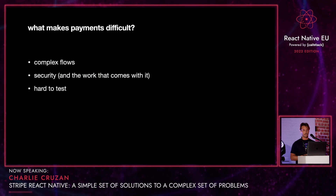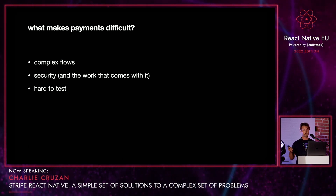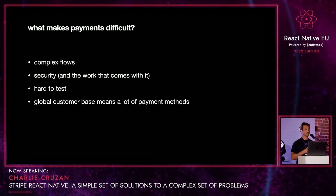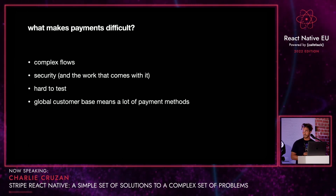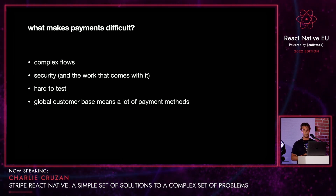Payment flows are just complex, like I mentioned earlier. So that means they're hard to test. End-to-end tests are essentially your only option, and even then it's hard to test every payment method that you want to use. Speaking of payment methods, if you are operating globally, you have to build out support for a lot of different payment methods. Not many developers want to build multiple checkout scenarios for all the different payment methods out there, of which there are a whole lot.